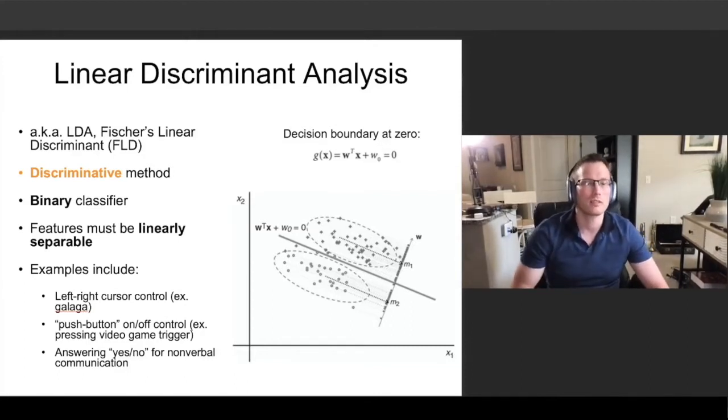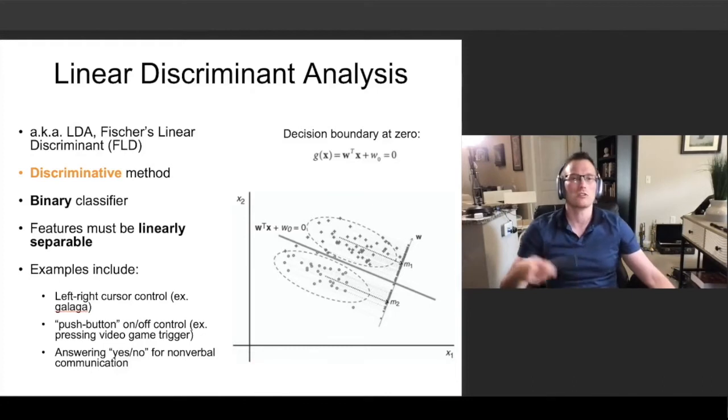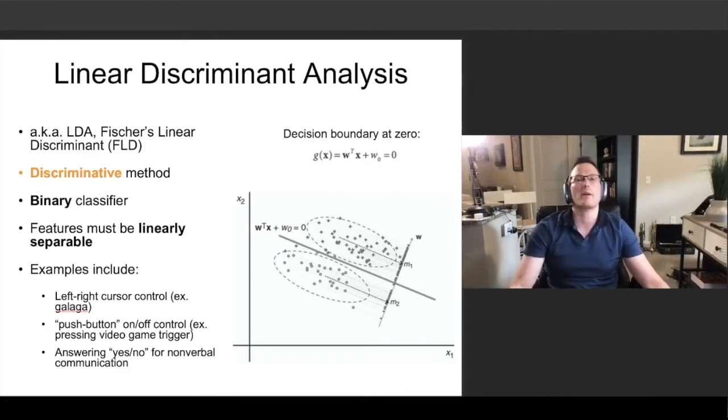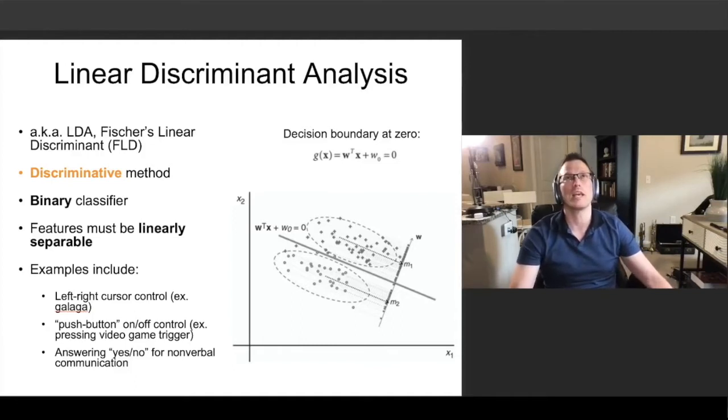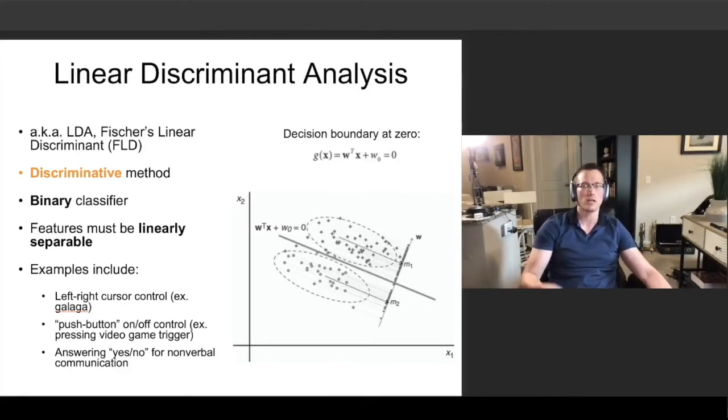Some examples of two class BCI problems could be the left-right cursor control of the Galaga video that I just posted. It could also be push-button on-off control for video game triggers, like that Doom video we saw. Or, going more into the medical application, if you have somebody in a non-verbal state, maybe close to a coma, this might be a way for them to communicate yes or no through motor imagery or some other mental effort that can be detected in a non-invasive measure like EEG. So, LDA.